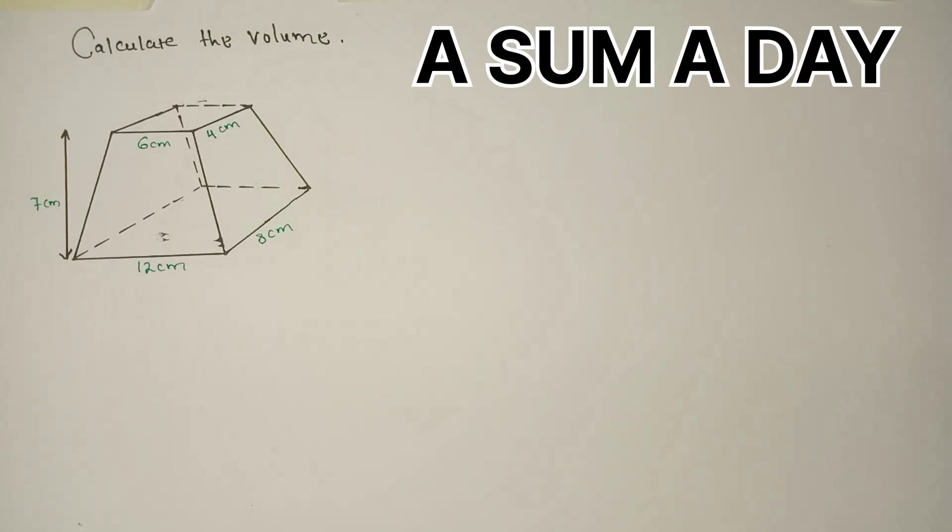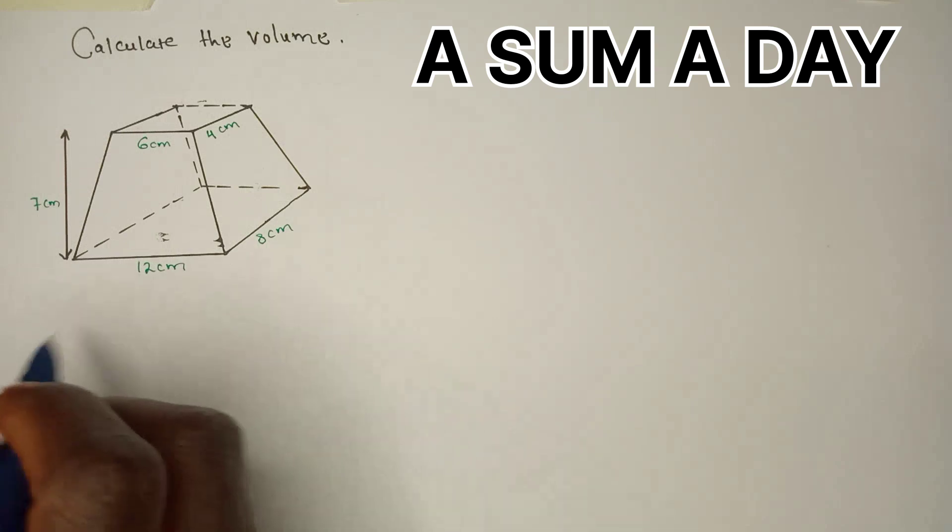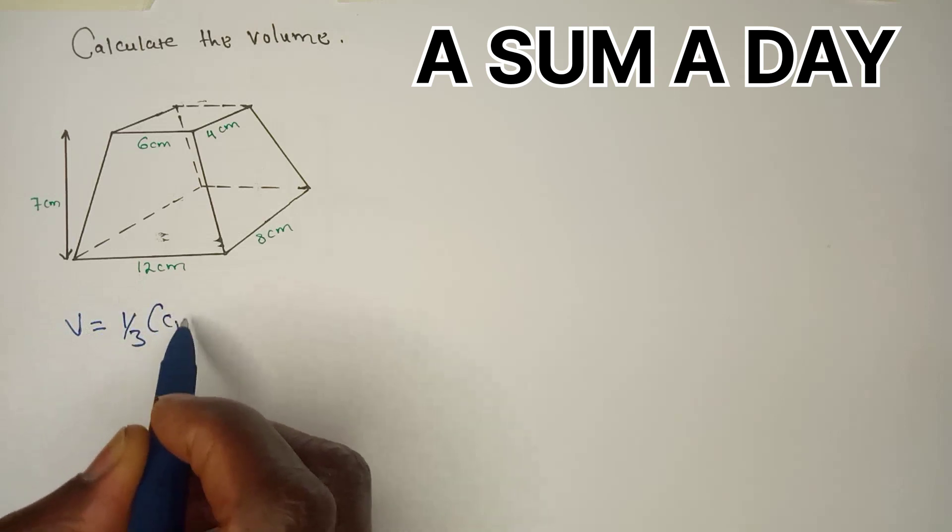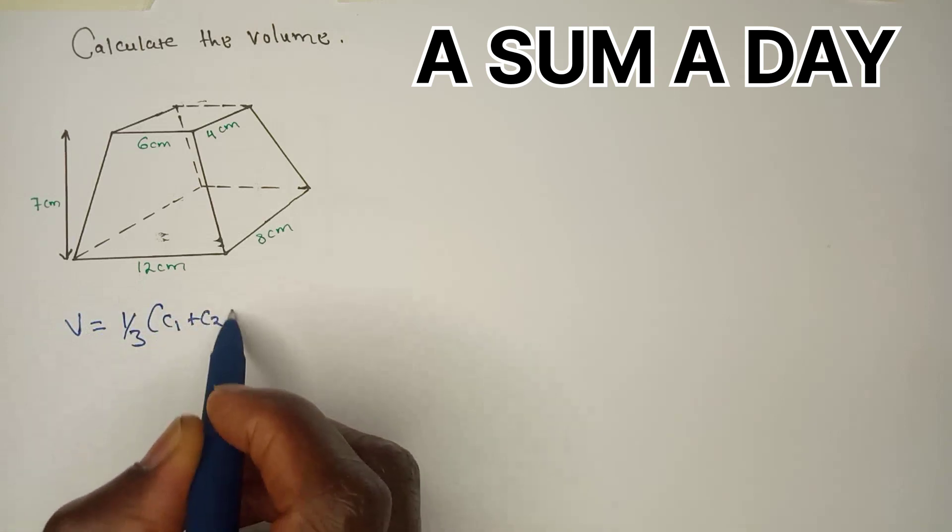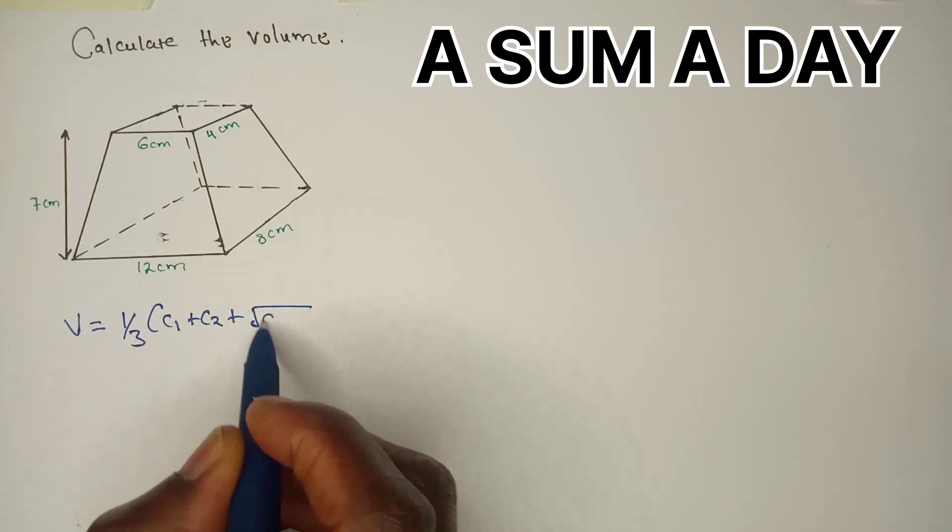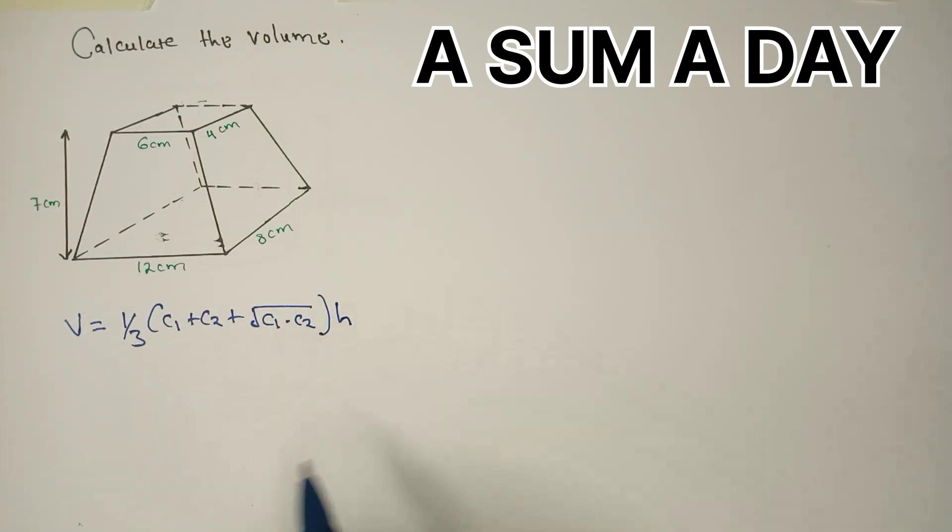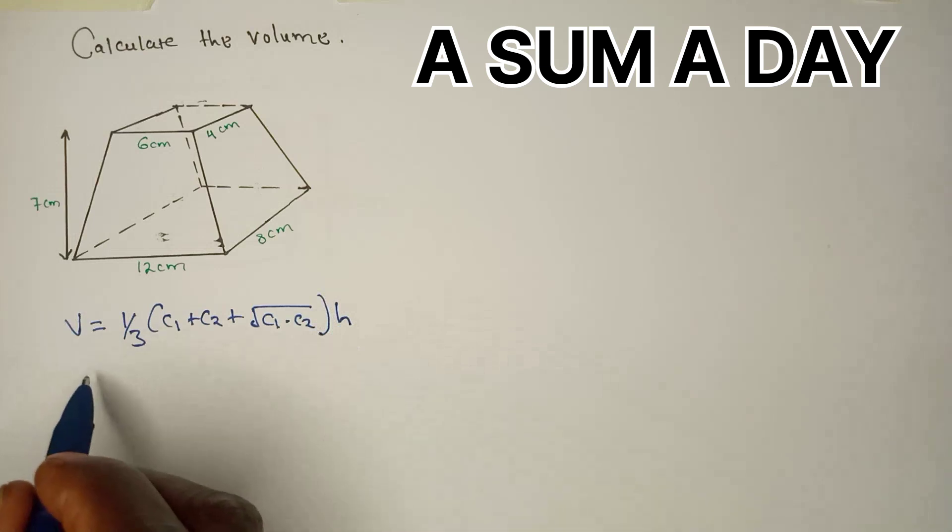Today I want to show you how to calculate the volume of a frustum using another formula. The formula goes like this: Volume equals one over three times C1 plus C2 plus the square root of C1 multiplied by C2, all multiplied by height. So what is C1 and C2?